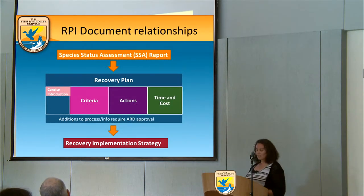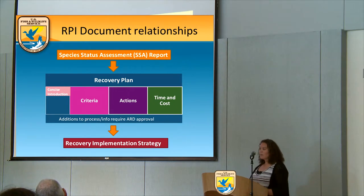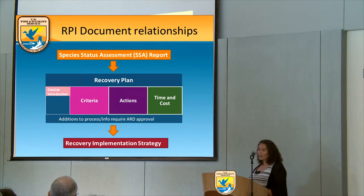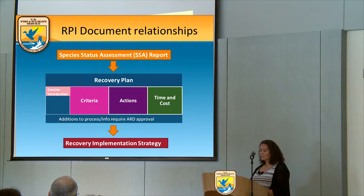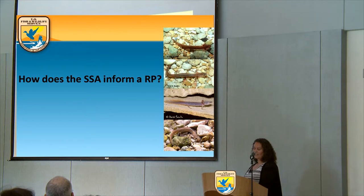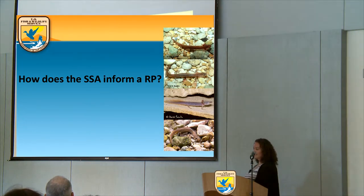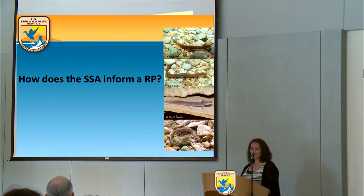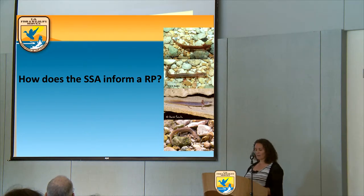Altogether, when we put these three documents together, we come up with a framework for the structure of recovery planning and implementation strategy that's designed to balance the statutory requirements and goals of recovery with the need to be more nimble and flexible to adjust to changing conditions. This is how we foresee the SSA informing a recovery plan.